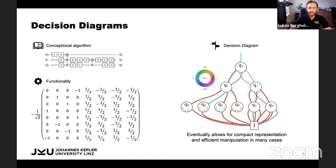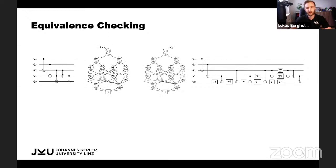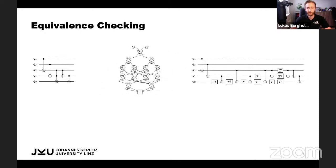How can these decision diagrams now be used for equivalence checking? Let's consider the two circuits from before. We just build the decision diagram for the first circuit and the decision diagram for the second circuit. Since decision diagrams offer a canonical representation for quantum functionality, if two decision diagrams are functionally equivalent, they actually share the same structure. So to conclude their equivalence, we can just compare the root nodes, and in this case, conclude that these circuits are indeed equivalent.